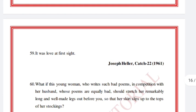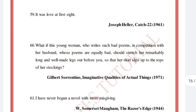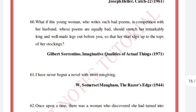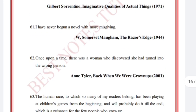'It was love at first sight.' Joseph Heller, Catch-22. 'What if this young woman who writes such bad poems in competition with her husband, whose poems are equally bad, should stretch her remarkably long and well-made legs out to take a short walk — so that her skirt slips up to the tops of her stockings.' Gilbert Sorrentino, Imaginative Qualities of Actual Things, 1971.